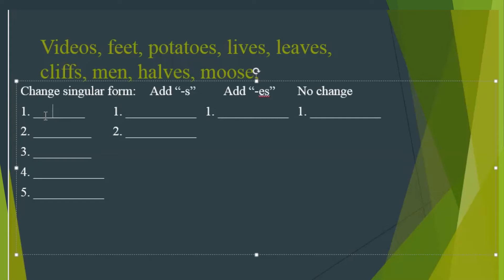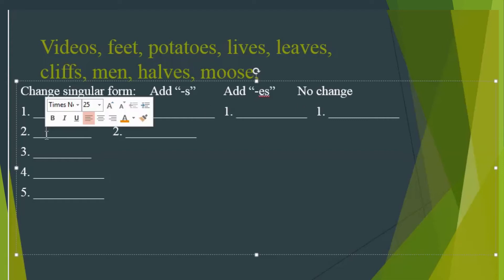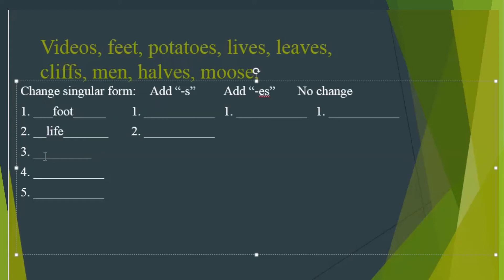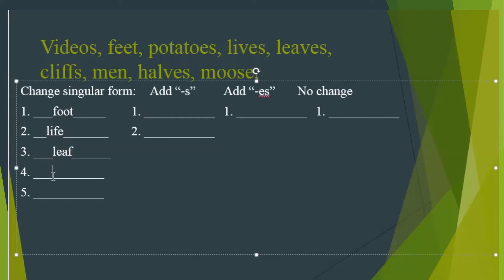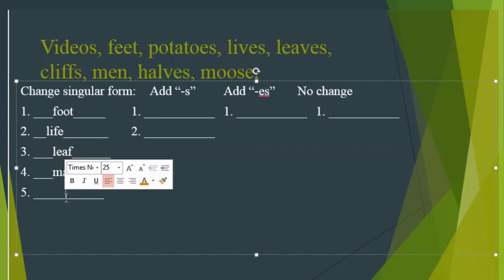This means that there are five words that change completely from singular to plural. For example, feet in the singular form is foot. Number 2: lives in the singular form is life. Number 3: leaves in the singular form is leaf. Number 4: men in the singular form is man. And number 5: halves in the singular form is half.